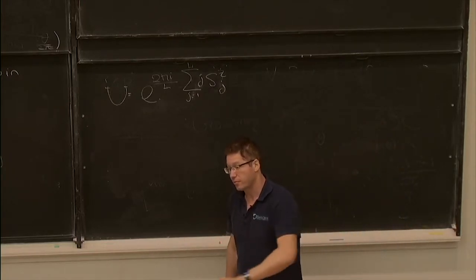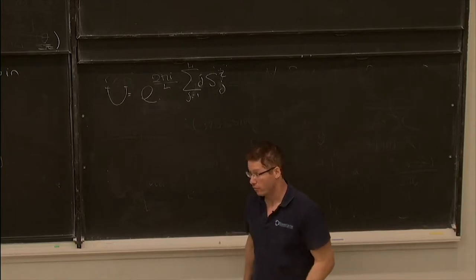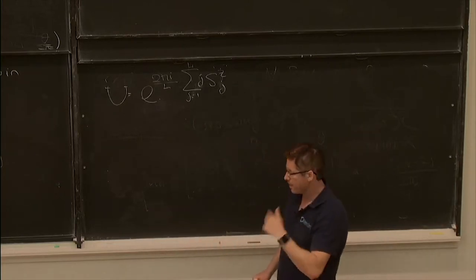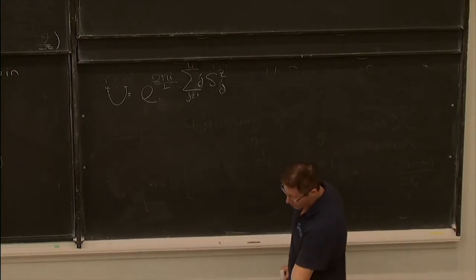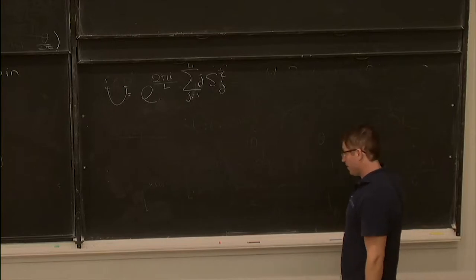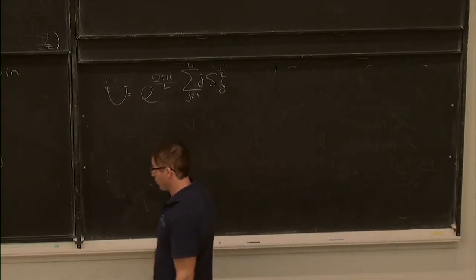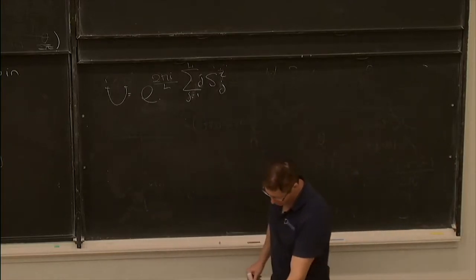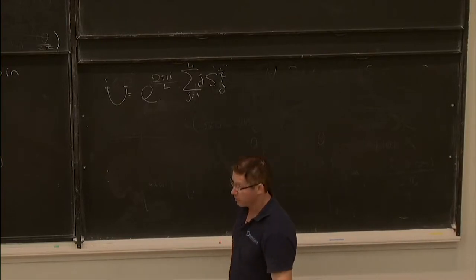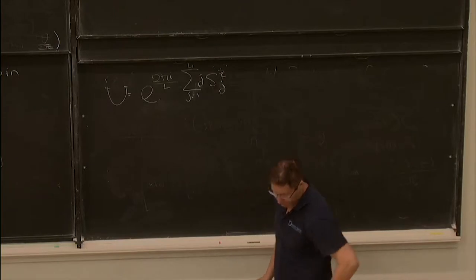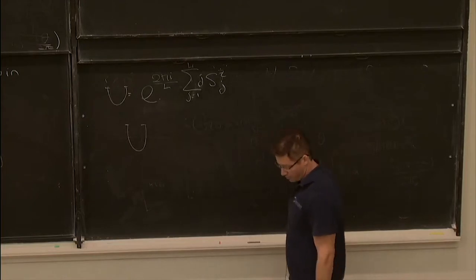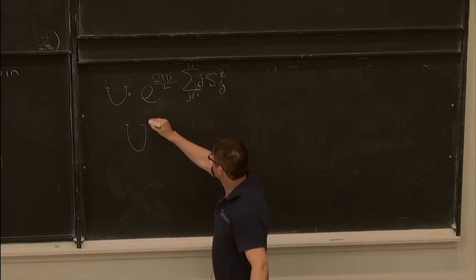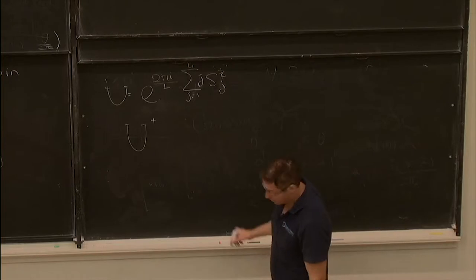You can think of U as a space-dependent SU2 rotation in the Cartan — in the continuum it's a space-dependent global symmetry transformation, so it's not a symmetry and it may change the energy. Why was this operator chosen? This is the main result in the work of Lieb, Elliot Lieb, and collaborators, and I believe they probably arrived at it by numerical experimentation.